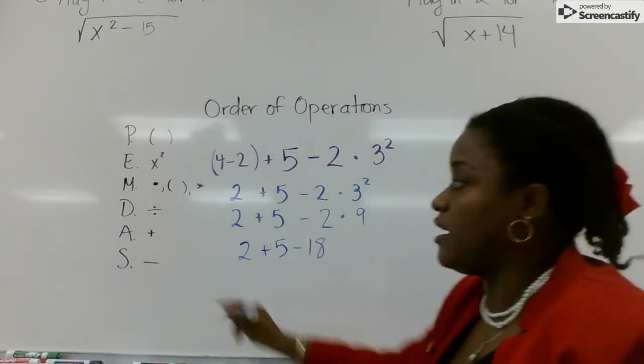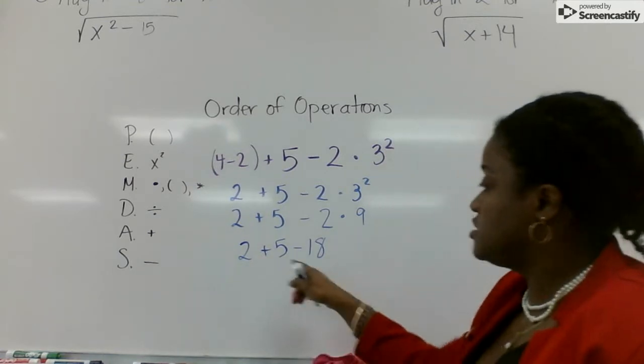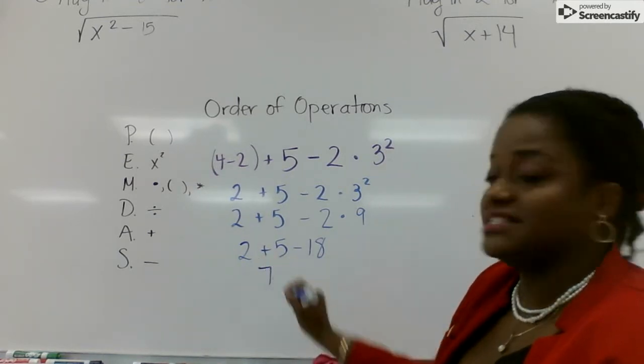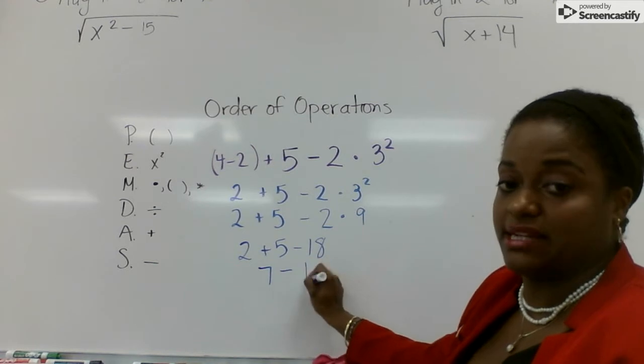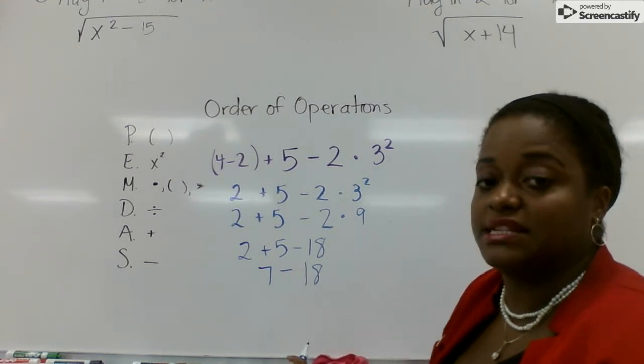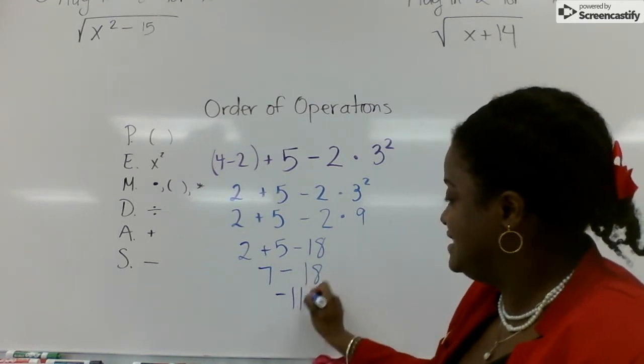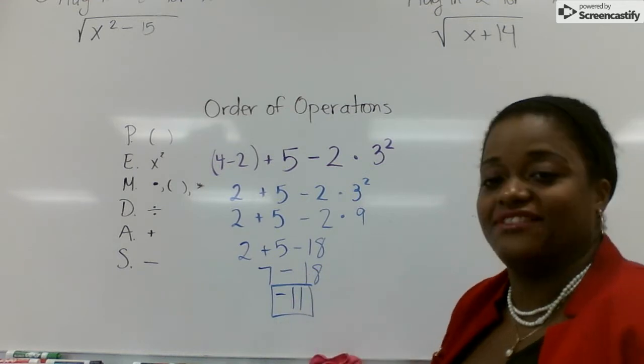Now we want to do our add then subtract. So what is 2 plus 5? 7. 18 and the minus stays the same. Now what is 7 minus 18? Negative 11.